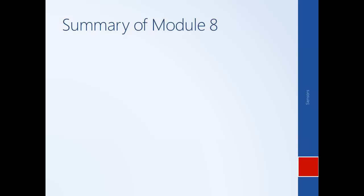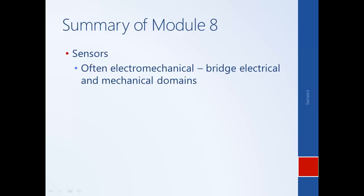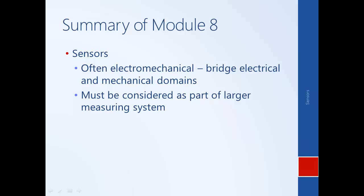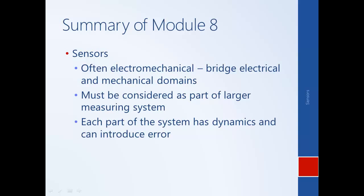This brings us to the conclusion of Module 8. In this module we discussed sensors — in particular, examples of electromechanical sensors that are able to bridge the electrical and mechanical domains of our control system. We also talked about how sensors must be considered as part of a larger measuring system, where the output may need to be processed and then used to generate an output or be read into a computer. Each stage of this measuring system has dynamics and can introduce error. We discussed several specific examples of signal processing — numerical integration, differentiation, and analog-to-digital conversion — and how they specifically introduce error that we must be careful about when using them in our larger control system.